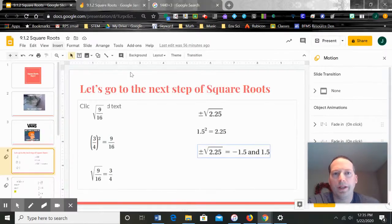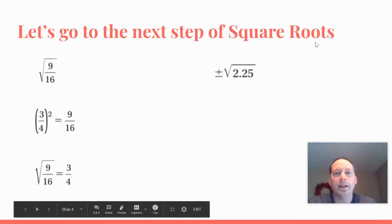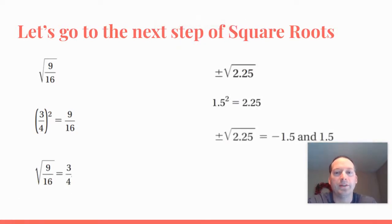So we know that 2.25 is the square of 1.5. So 1.5 squared is 2.25. Therefore, the positive and the negative square roots of 2.25 are negative 1.5 and 1.5.